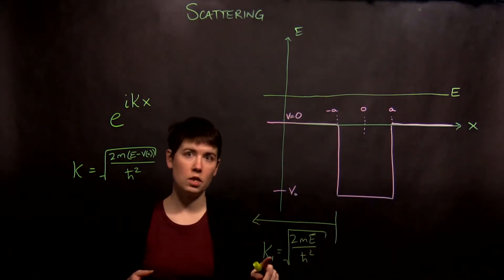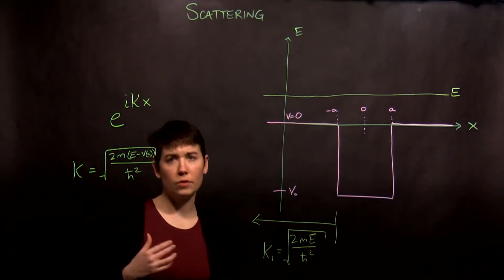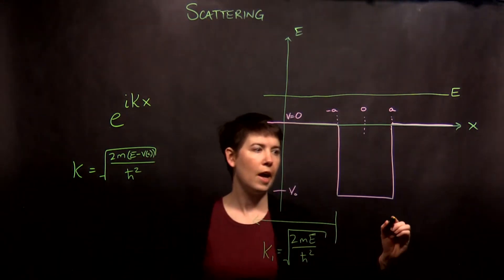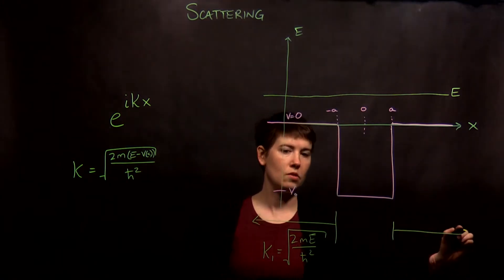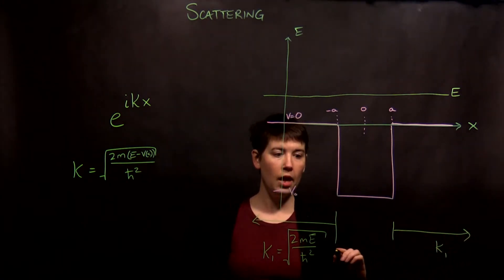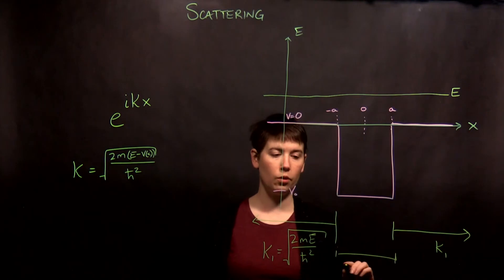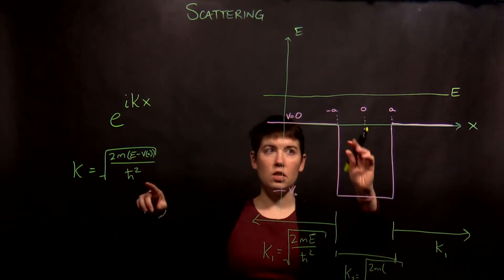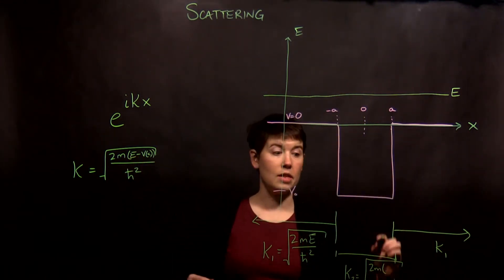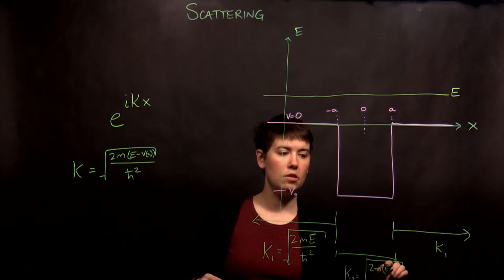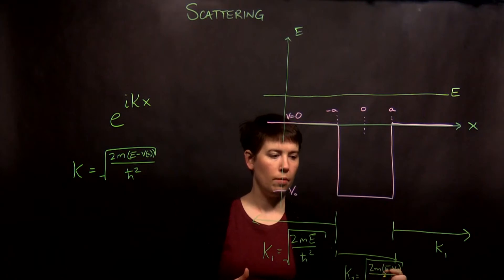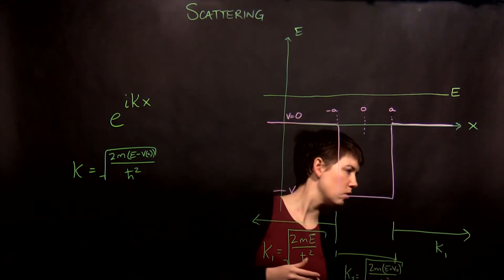Keep in mind that the subscript 1 here isn't meaning our first energy state, because there's not going to be a constraint — it just refers to this region. In fact, the far right region also has V the same, so it will also be K1. In the well region we have K2, where this would be E minus V, but notice V is negative, so this is E plus V-naught, meaning the kinetic energy above the ground is bigger than it was before, over ℏ².